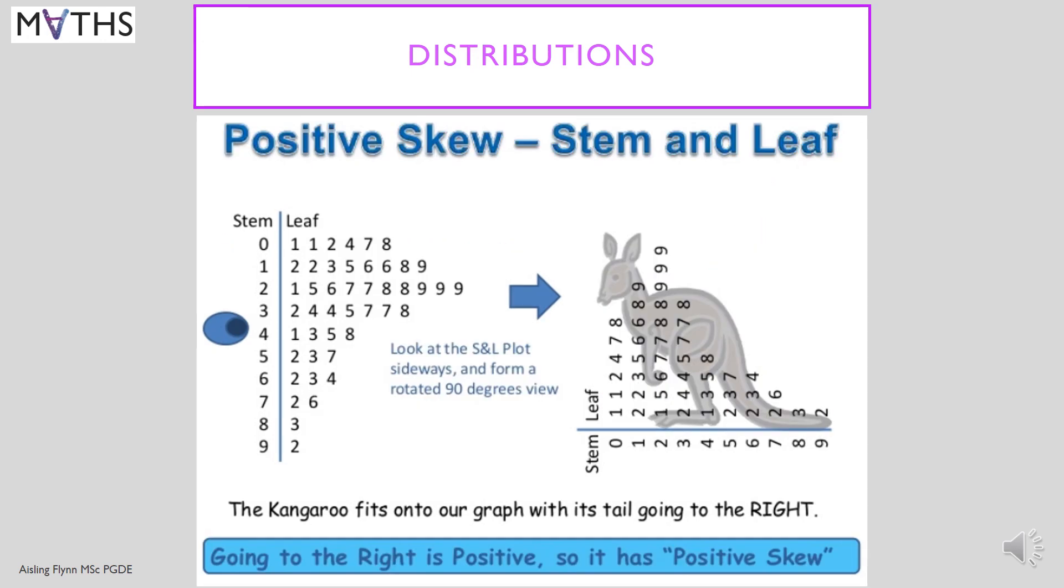Here's a skewed positive or positive skew stem and leaf. Again, you've got to imagine it rotated. Identify where the peak is. That your median will be in there somewhere. Look at the shape. And you can see that yes, it tails off to the right. So it's right skewed or skewed right. And it's positively skewed.